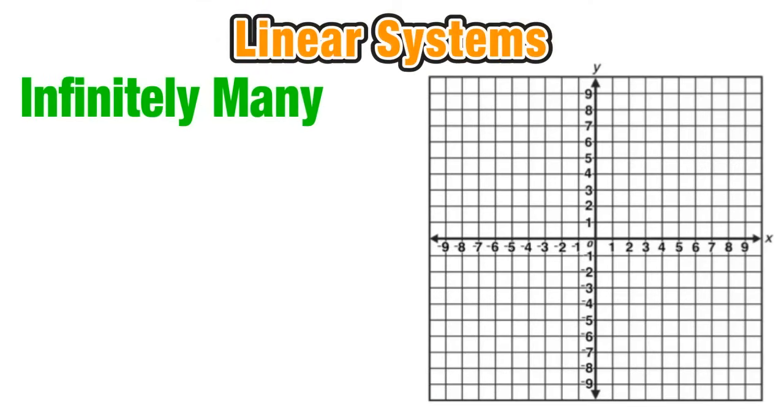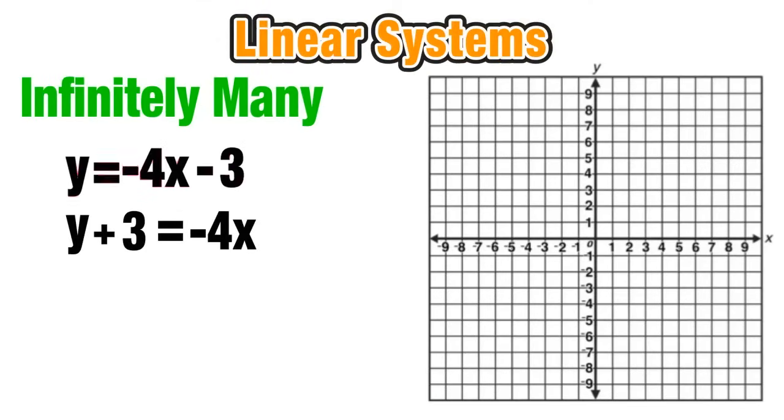And the last type of a solution to a linear system is infinitely many solutions. So let's go ahead and graph our first line here, y equals negative 4x minus 3.